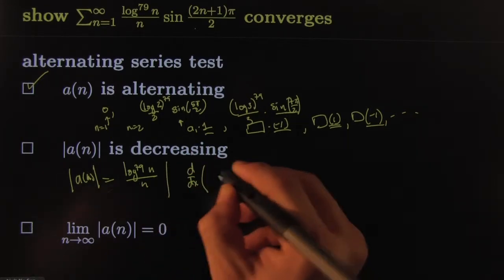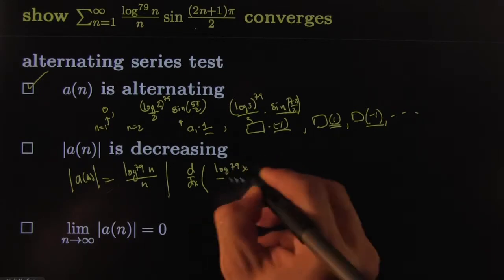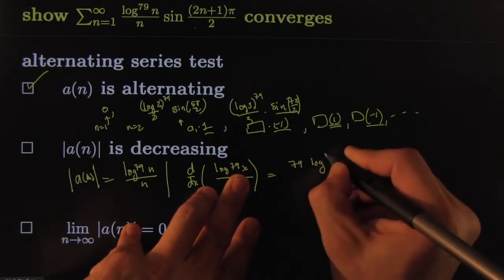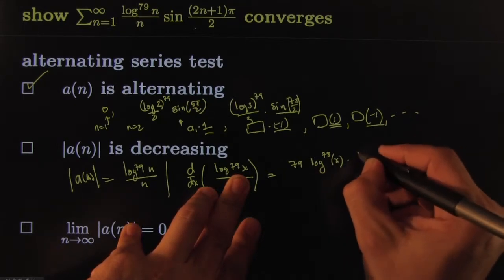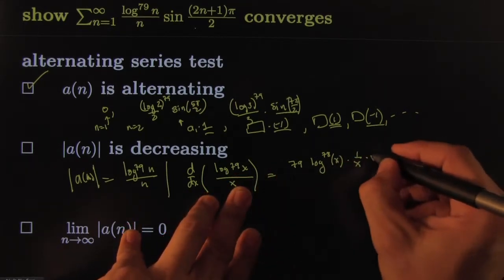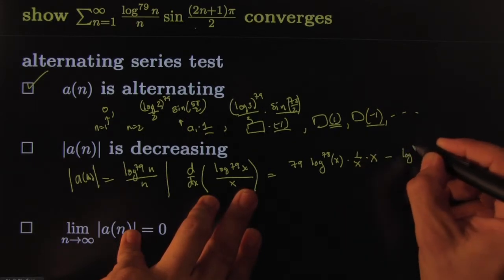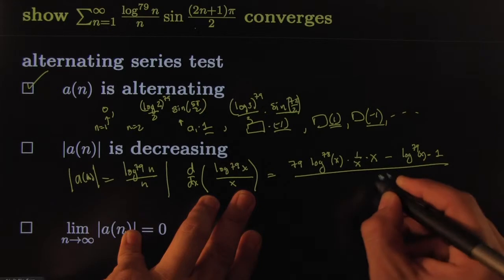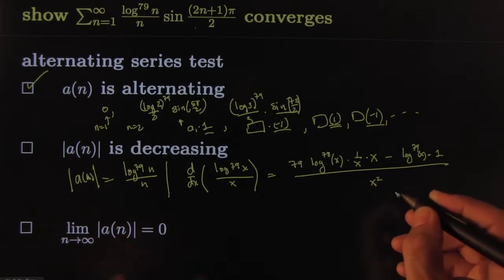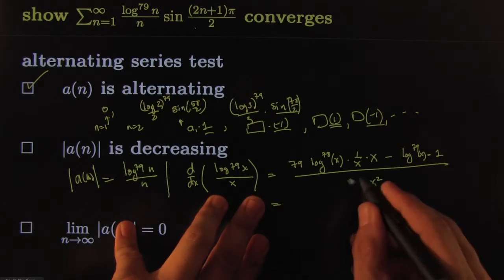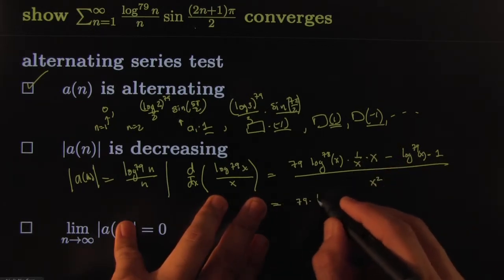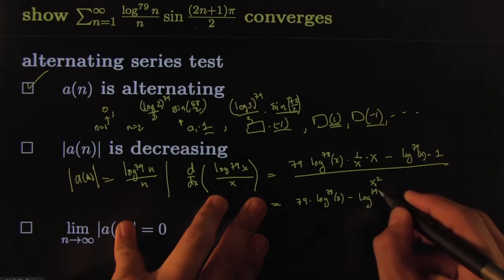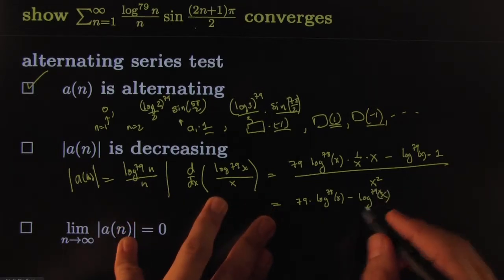So you do d/dx of log to the 79th x all over, so you get the derivative of the top, which would be 79 times log to the 78th power x times 1 over x times the bottom, which is x, minus the top, which would be log 79th power x times the derivative of the bottom, which would be just 1, all over the bottom square. So you have all over x square. And what we have to argue is that this is always negative. So this becomes, this gets you to 1, so it's 79 times log 78th power of x, minus log 79th power of x.